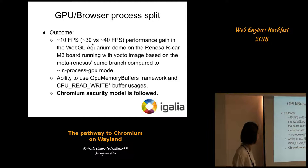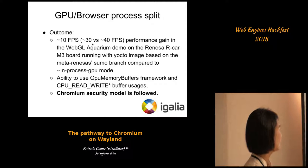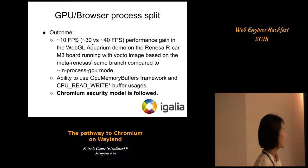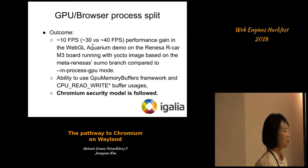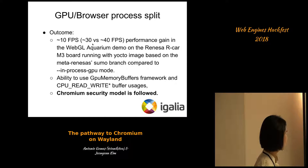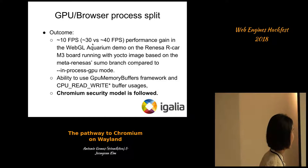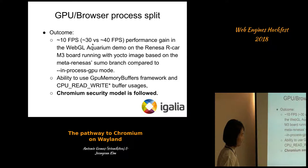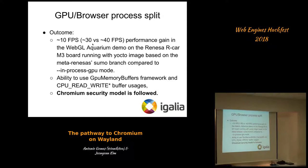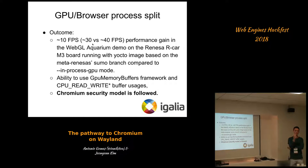Here are the results. We achieved an improvement of around 10 FPS more than the case without the GPU split. The result was from the WebGL Aquarium demo on the LUNASAS Alta F3 board, which is an embedded device. We had the ability to use GBM memory buffer framework, and naturally we got improvements in security and morale. We were able to gain performance, comply with Google's process model requirements, and make the browser process — which responds to the user — less overloaded, resulting in faster responses.